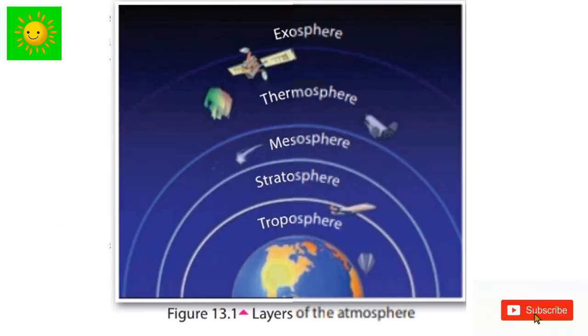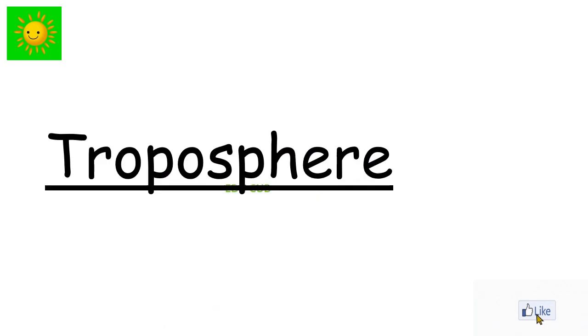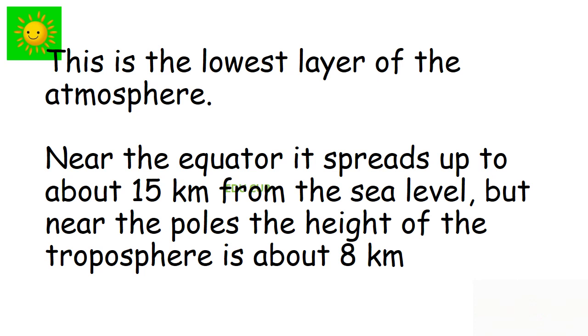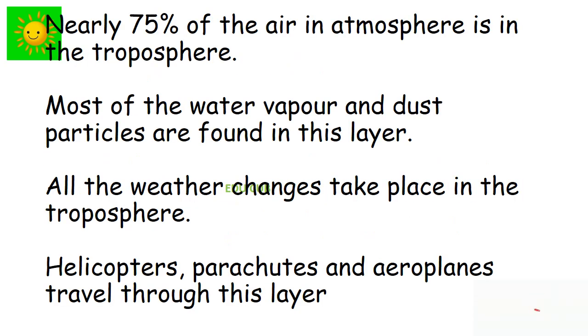Now you can see layers of atmosphere here and how it is spread from the earth's surface respectively. The first layer is troposphere. This is the lowest layer of atmosphere. Near the equator, it spreads up to about 15 km from the sea level, but near the poles, the height of the troposphere is about 8 km. Nearly 75% of air in atmosphere is in the troposphere.